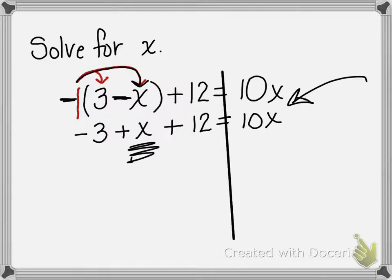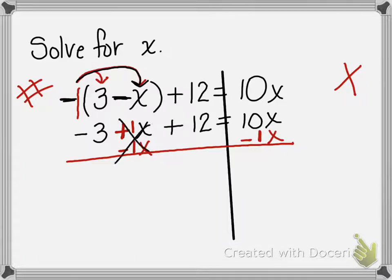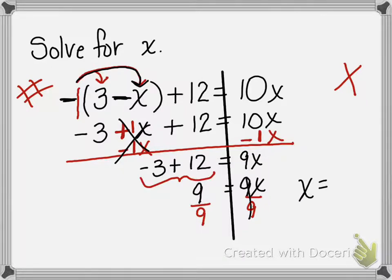I've got that one x over here on this side and another x over there. I'm going to make this my x side and this my number side. This is a positive x so I'm going to do the opposite and subtract x from both sides — there's a 1 in front of each. That cancels, leaving negative 3 plus 12 equals 10 minus 1, which is 9x. Hold your board up if you have your answer. Negative 3 plus 12 is 9, so 9 equals 9x — divide both sides by 9 and x equals 1.